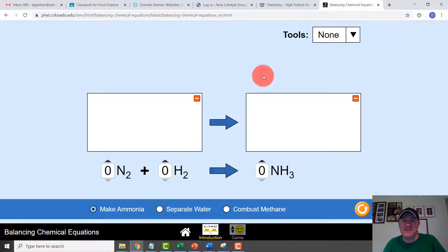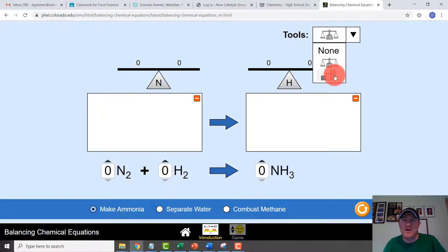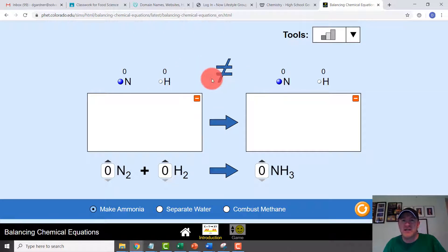So our introduction, once you're in there, you can choose different things to help you look. And we have three examples. We have making ammonia, making water, separating water, which is the opposite of what we just saw on the previous page. And combusting methane. So I can add a couple things. I can have nothing up at the top, or if I want to have a scale between my materials, or if I want to have like masses and numbers, that may help you.